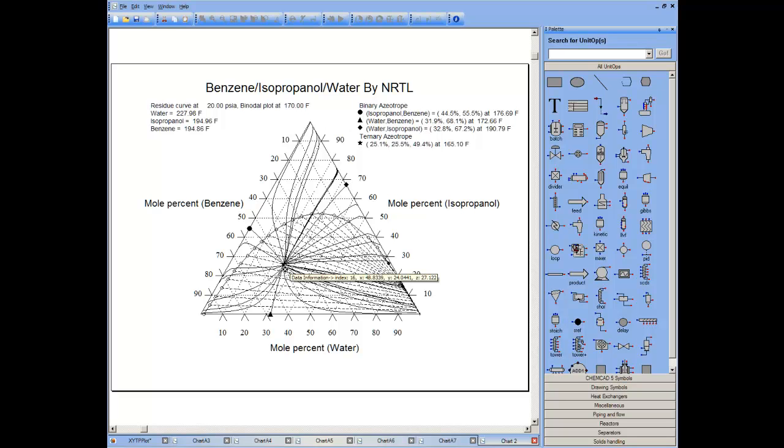This gives you an indication on a residue curve that we have certain areas beyond which we cannot distill. For example, if we had a feedstock in this area, we would anticipate that the bottoms would approach pure isopropanol, and the overhead would approach pure azotrope.